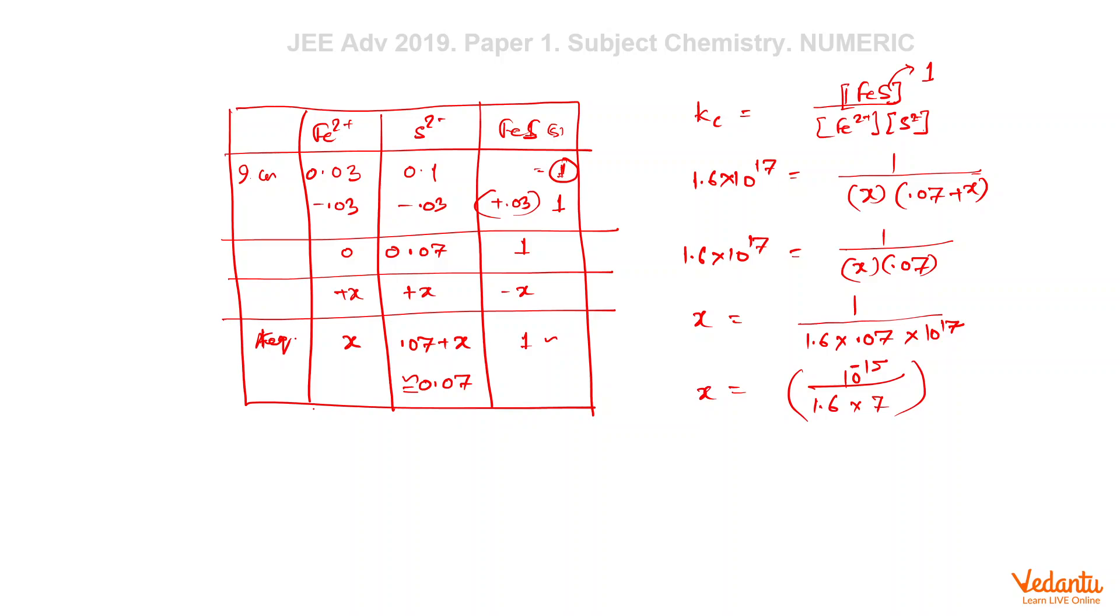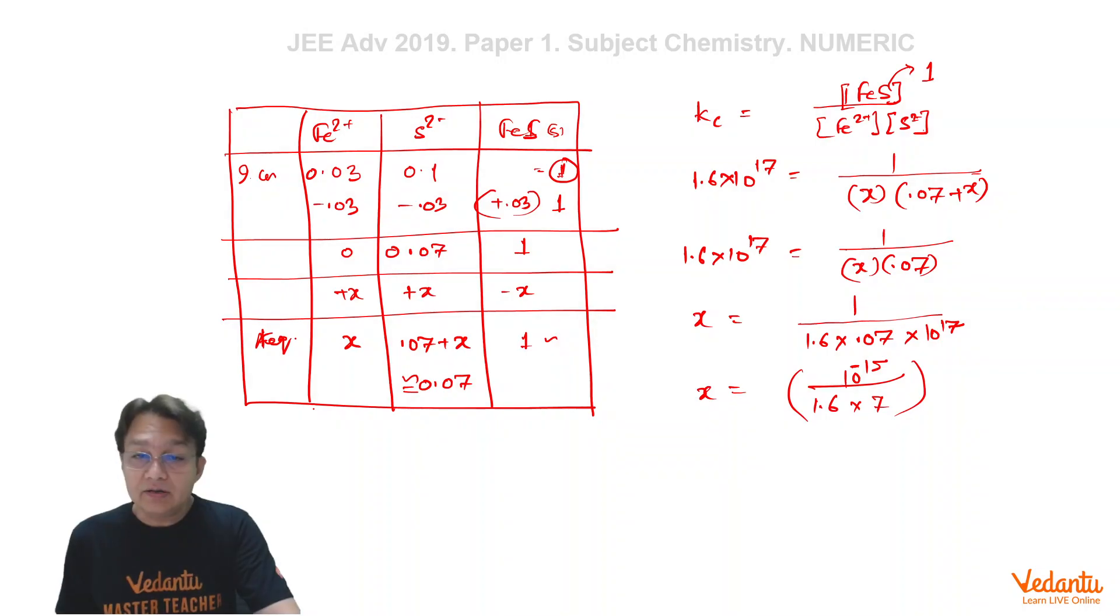So obviously we can see from here that X is very small and if X is very small then our assumption that we can ignore X with respect to 0.07 is validated, is very much true. So we have a full confidence on this approximation.